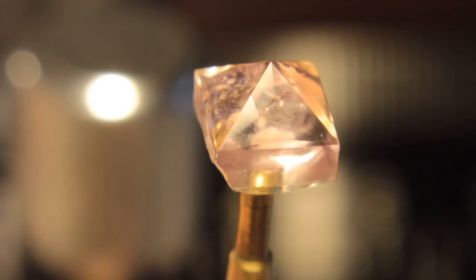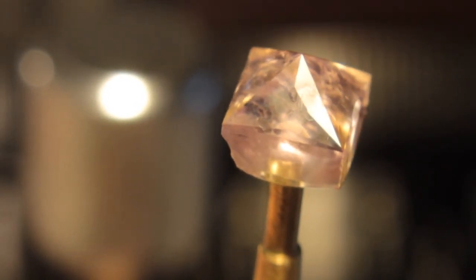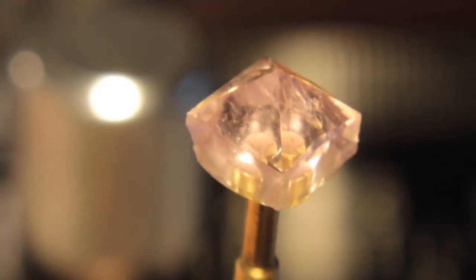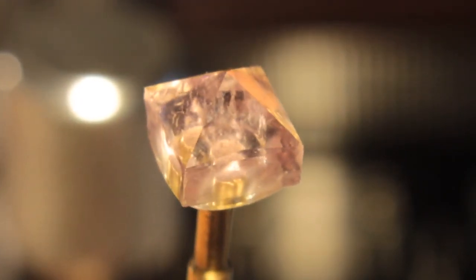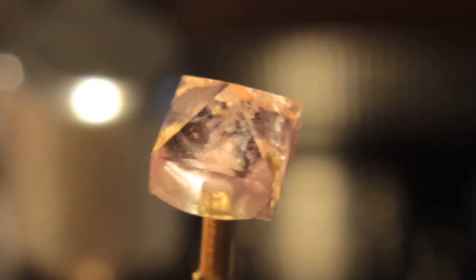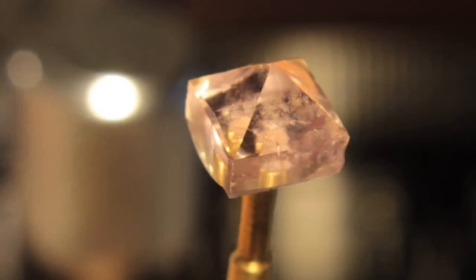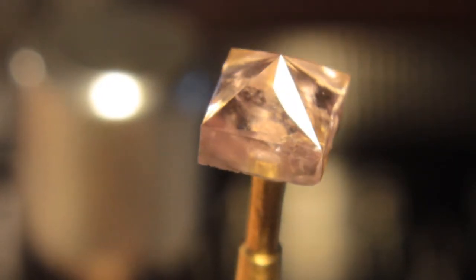I polished the pavilion of our Morganite with a 60,000-grit diamond on a zinc lap. I just wanted to use that lap. I think it would have worked with the Creamway lap and cerium oxide, but every once in a while I like using my 60,000-grit diamond just to stay in practice with it. So now I'll transfer the stone and cut the upper half.